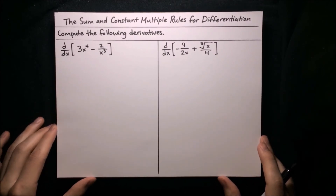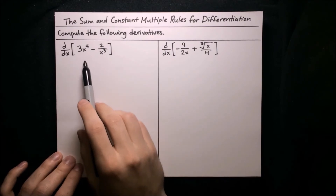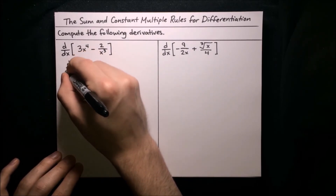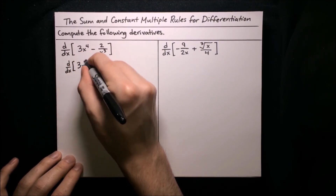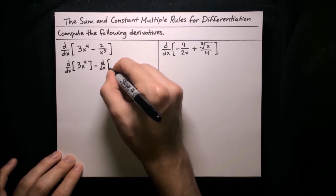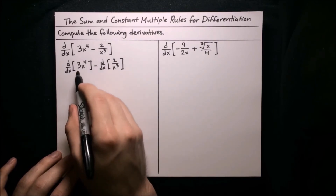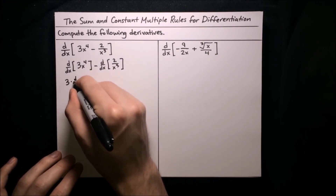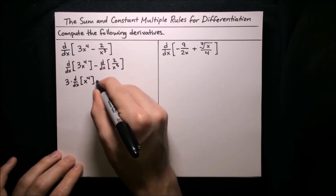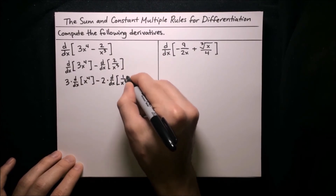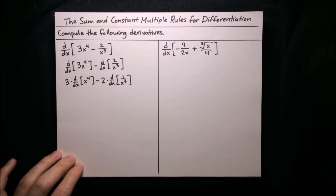Here are our final couple of examples. First, the derivative of 3x to the 4th minus 2 over x cubed. This is a difference, so we use the sum rule to split this derivative over each term: d/dx of 3x to the 4th, minus d/dx of 2 over x cubed. Then we use the constant multiple rule to pull the constants out of each derivative: 3 times the derivative of x to the 4th, minus 2 times the derivative of 1 over x cubed.